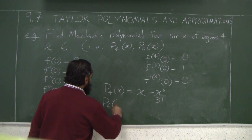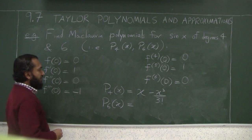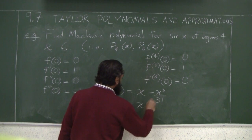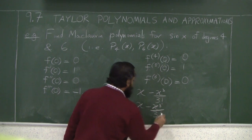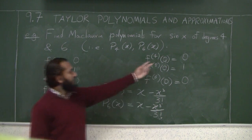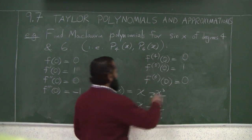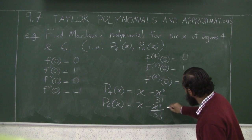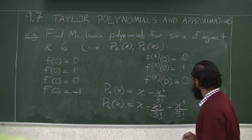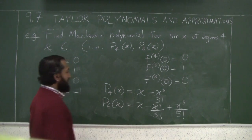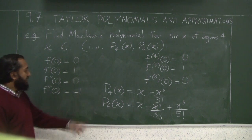So going the same way, I think you can probably write this term without too much more calculation. You already have this part. The 5th degree term will be 1 times x to the 5 over 5 factorial, so you get x to the 5 over 5 factorial. That's your 6th degree polynomial, but actually it's a 5th degree polynomial.